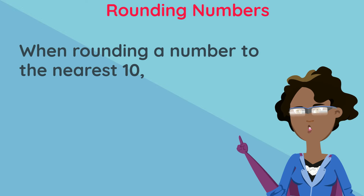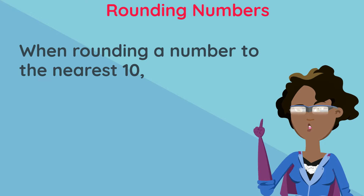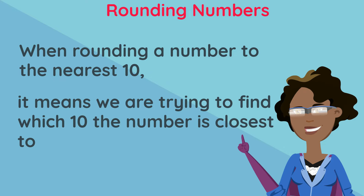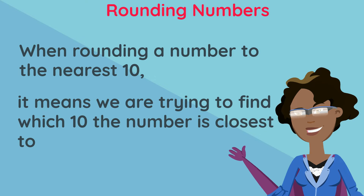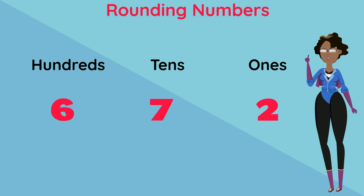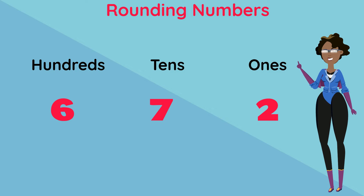When rounding a number to the nearest 10, it means we are trying to find which 10 the number is closer to. Let's look at the steps to rounding a number to the nearest 10.